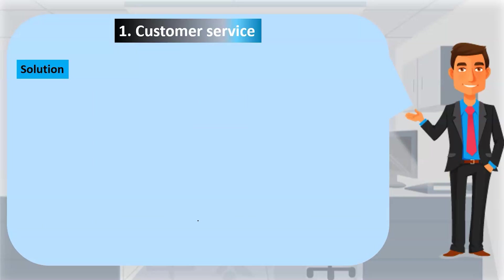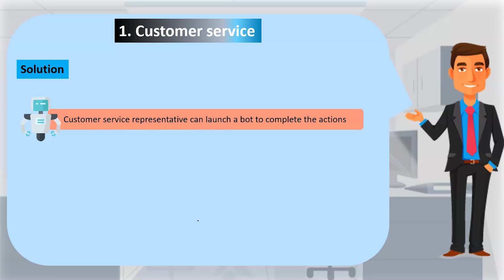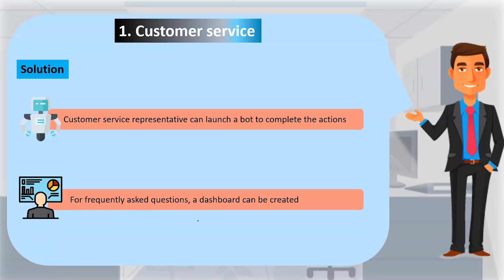The solution requires identifying frequently asked customer questions, assessing customer representative actions in response to those questions, and developing RPA solutions to facilitate those questions. When several sets of information need to be coordinated across systems, the customer service representative can launch a bot. The bot completes all actions in seconds with the press of a button. For frequently asked questions, a dashboard can be created, and bots will use that data in multiple systems to complete the transaction.